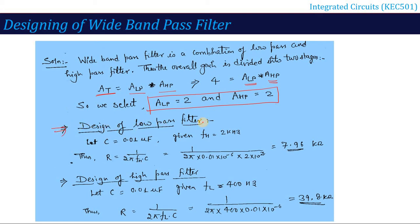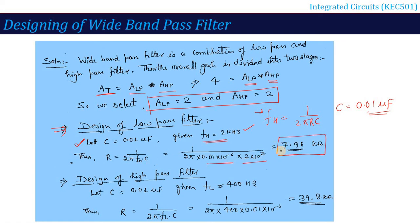For the low pass filter stage: fH = 2 kHz. Using fH = 1/(2πRC), let C = 0.01 μF, so R = 1/(2π × fH × C) = 7.96 kΩ. For the high pass filter stage: fL = 400 Hz. Using the same formula with C = 0.01 μF, R = 1/(2π × fL × C) = 39.8 kΩ.